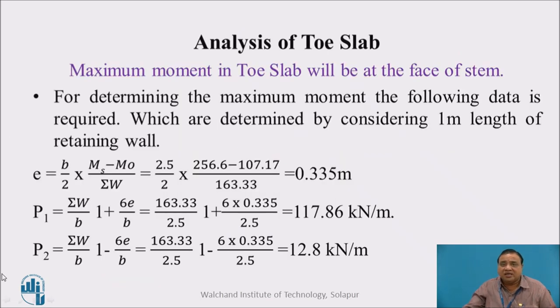For determining the maximum bending moment, following data is required, which are determined by considering one meter length of retaining wall. First, we calculate the eccentricity of the loads which are coming down and the lateral pressure. Here we take moment about the end of toe and find out the stabilizing moments and destabilizing or overturning moments. Overturning moment is the moment created by the soil pressure or horizontal pressure of soil, and stabilizing moment is the moment created by all weights: weight of stem slab, weight of base slab, and weight of soil.